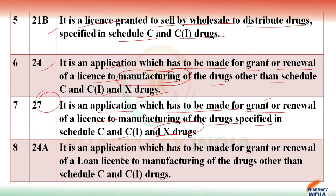The last one is an application which has to be made for grant or renewal of a loan license for manufacturing of drugs other than Schedule C and C1 drugs.